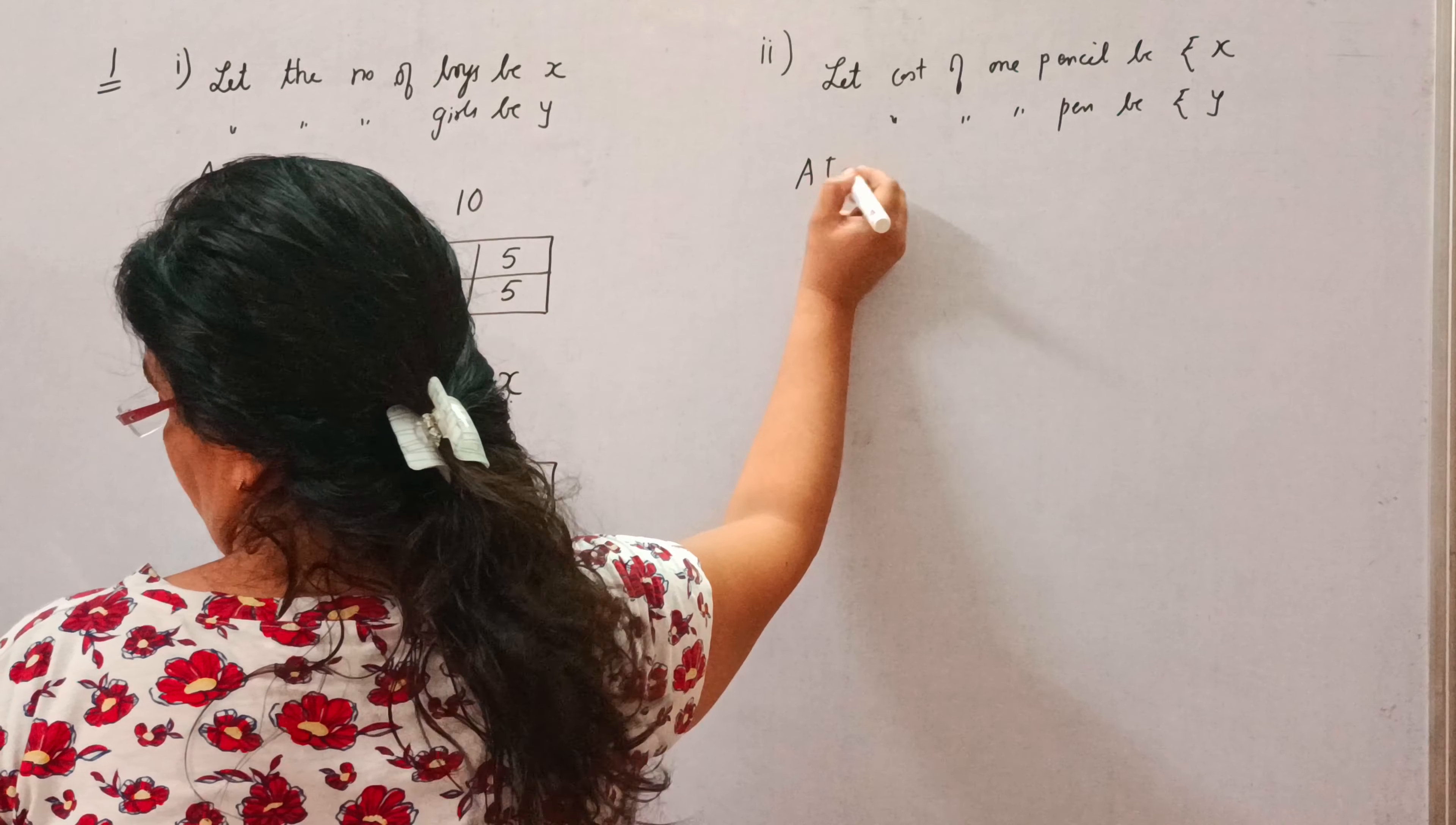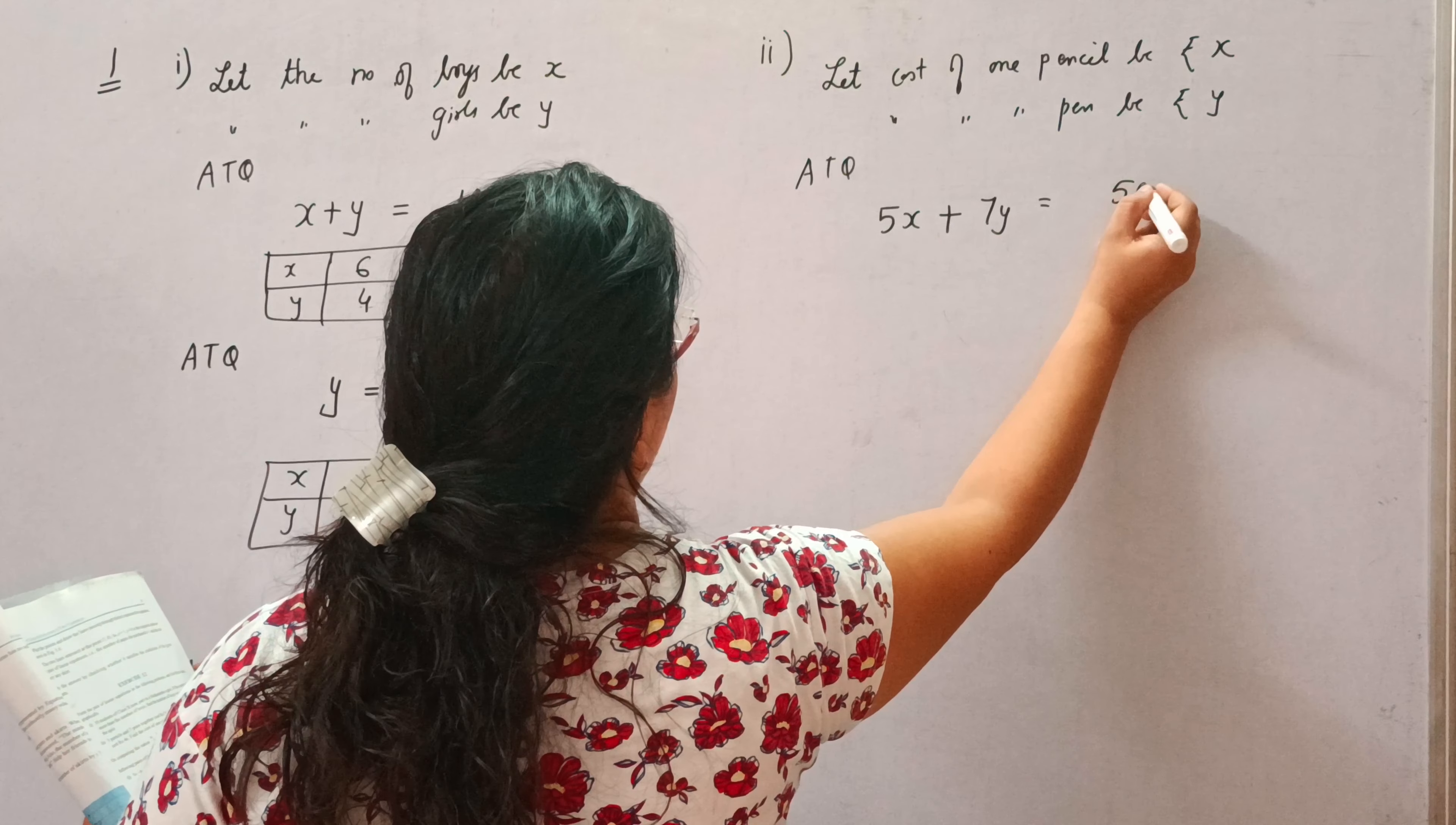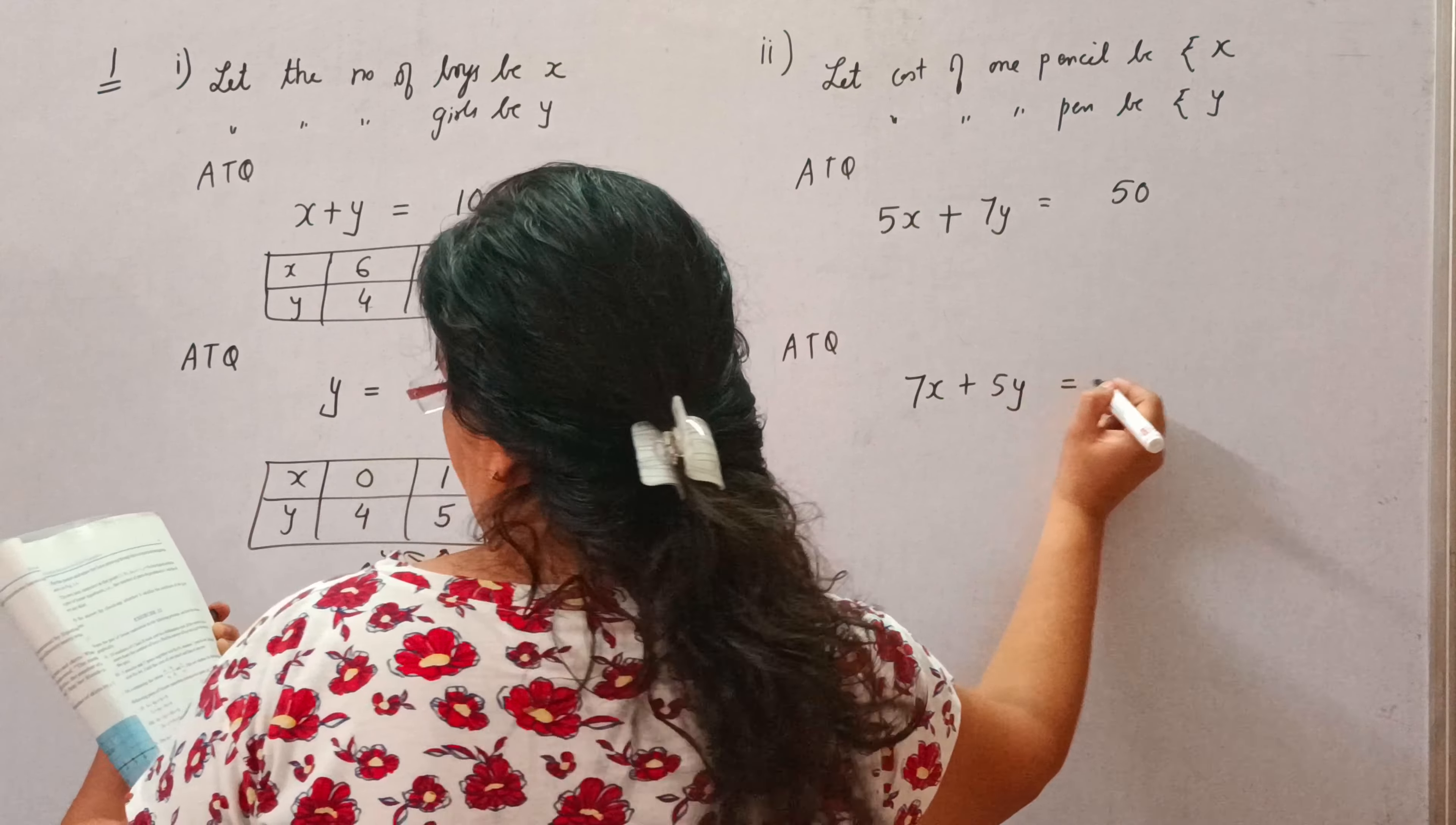So, we will consider that cost of 1 pencil be rupees x and cost of 1 pen be rupees y. Now, according to the question, 5 pencil means 5x, 7 pens means 7y together make cost rupees 50. And in second situation, 7 pencils and 5 pens. Their total cost is 46.